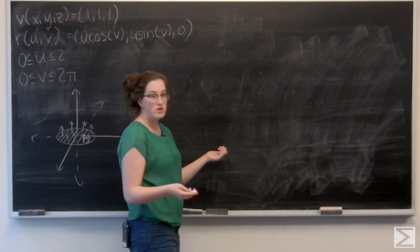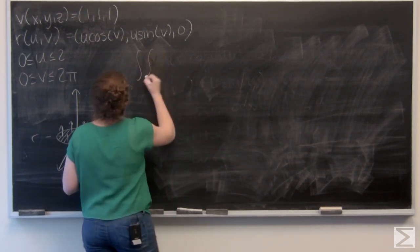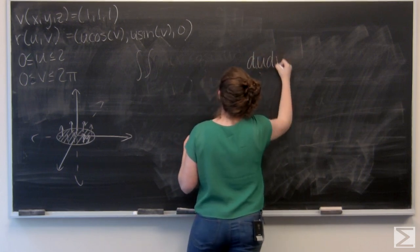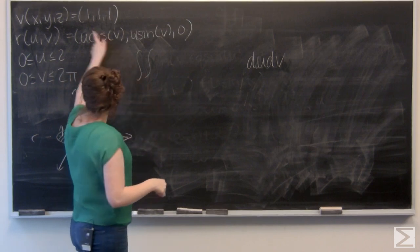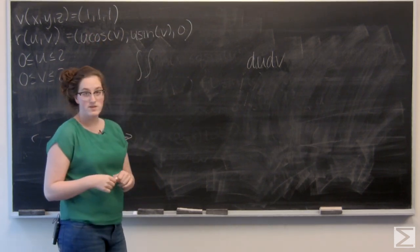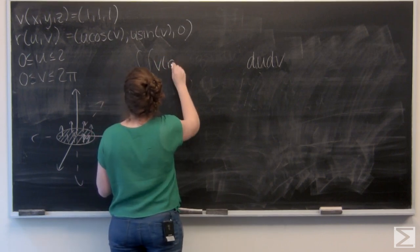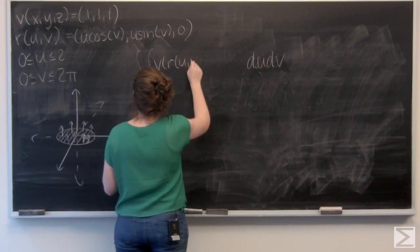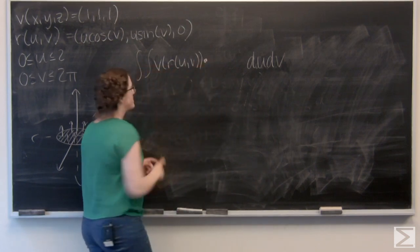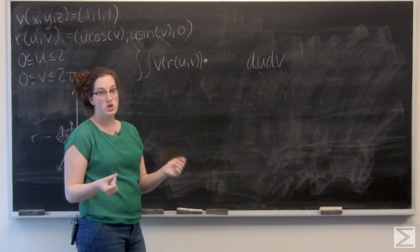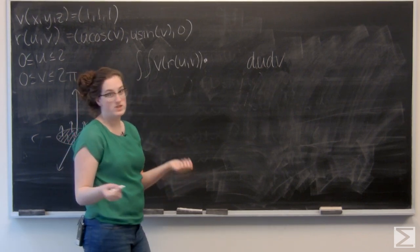So I've got a double integral with respect to u and v. The vector field evaluated at the surface, so v of r, and I take the dot product of this vector with r sub u cross r sub v. So the two partial derivatives of the parametrization of the surface.